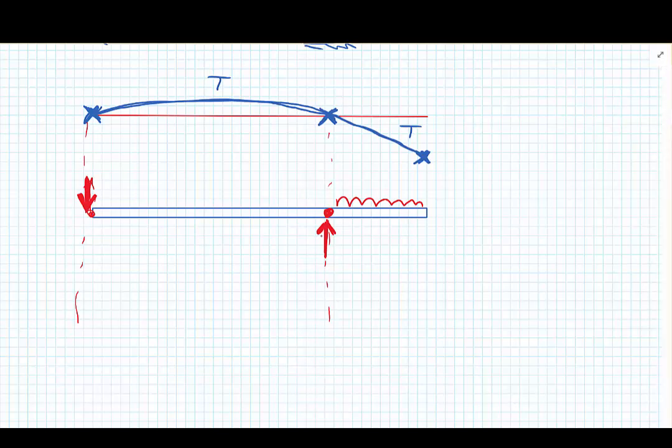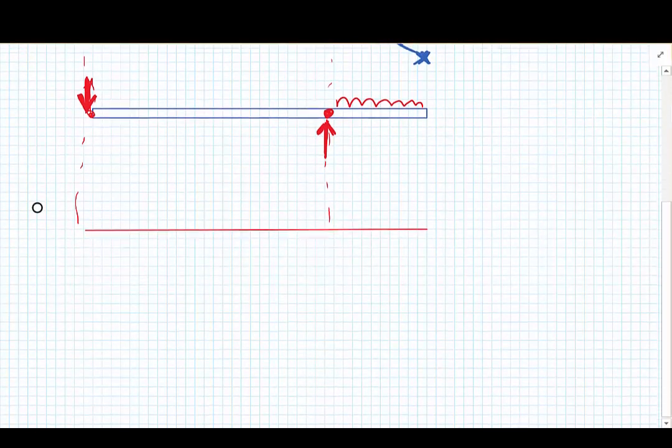So now we have the directions of our reactions and our free body diagram for the beam. So we're going to proceed now finally to draw qualitatively what our bending moment diagram must look like.